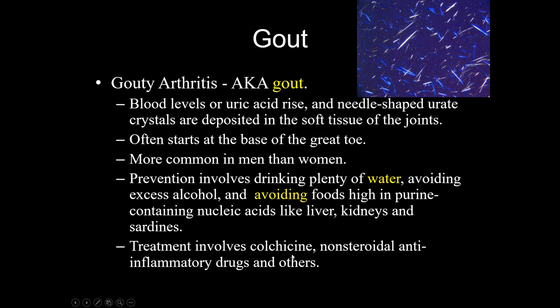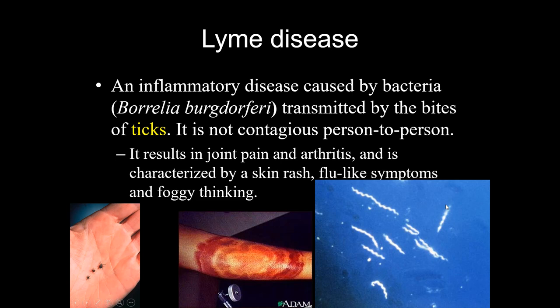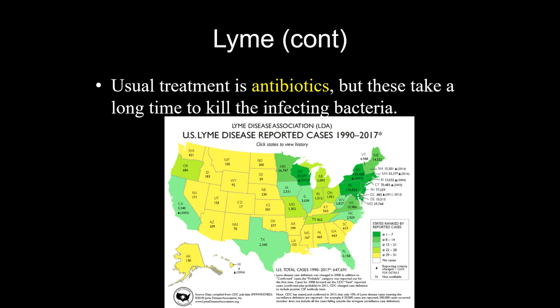Lyme disease is in this chapter because one of the main symptoms is arthritis — joint pain — but you also get flu-like symptoms like fever and body aches. The vector is a tick and the causative agent is Borrelia burgdorferi, a bacterial species. It creates erythema migrans, a bullseye rash. Treatment is antibiotics, and they need to be given early — if not treated early you can end up with lifelong complications. Lyme disease is not super common in Texas but cases do occur, so you need to be aware if you're going to work in the industry.